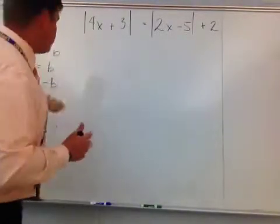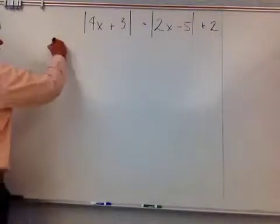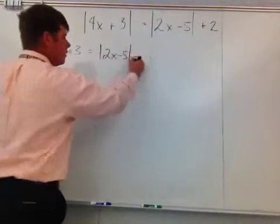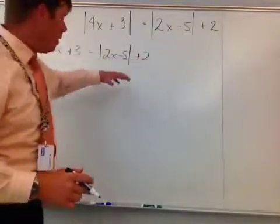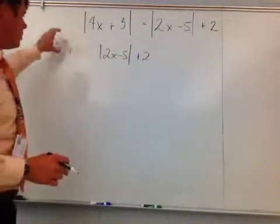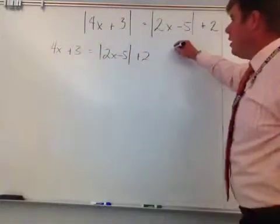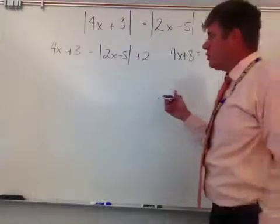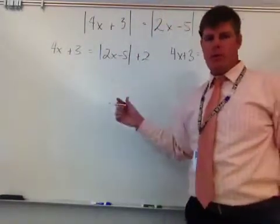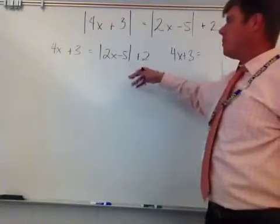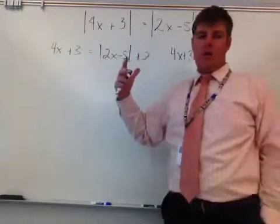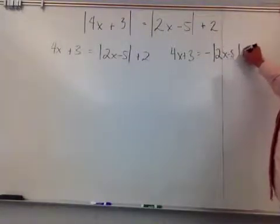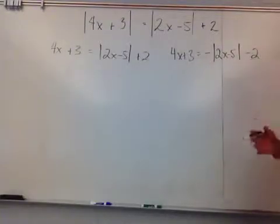We start by saying 4x plus 3 is equivalent to the absolute value of 2x minus 5 plus 2 — that whole expression is my b, and 4x plus 3 is my n. Then for the second case, we take the opposite of all that. You can put everything in parentheses and distribute negative 1. So we get the opposite of the absolute value of 2x minus 5, and the opposite of positive 2 gives negative 2.